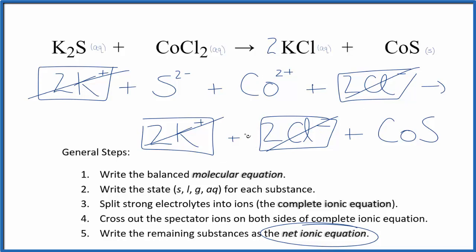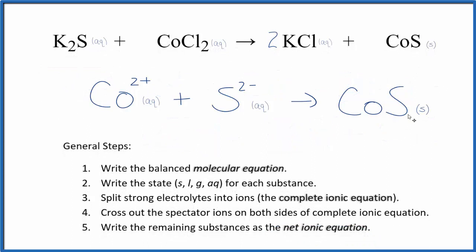I'll clean this up and write the states. We'll have our net ionic equation. So this is the balanced net ionic equation for potassium sulfide plus cobalt two chloride.